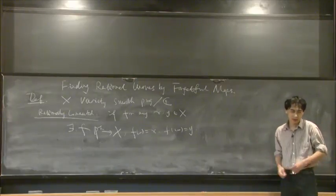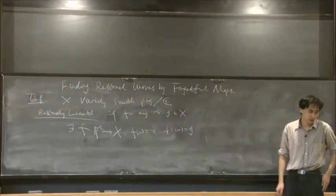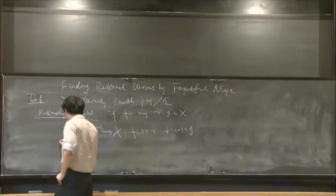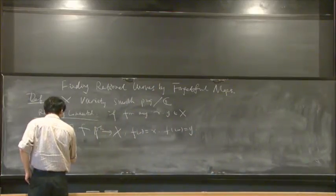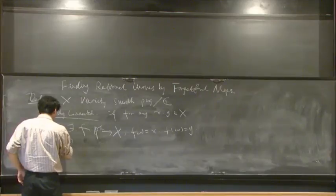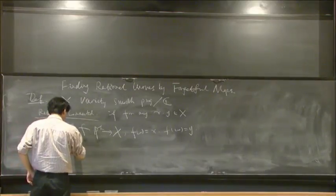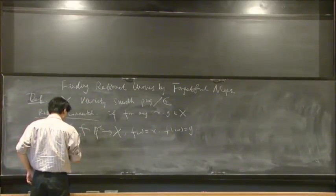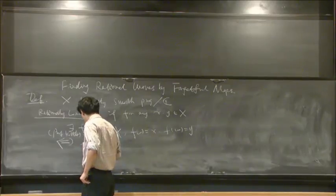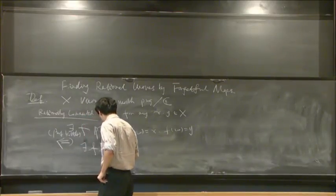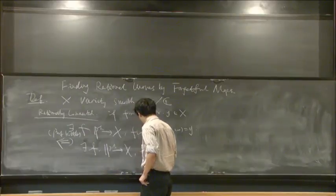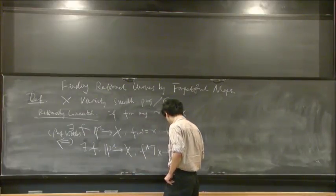So that's the definition: any two points can be connected by a rational curve. This definition is equivalent — by a theorem of Professor Kollár — to the existence of a map from P¹ to X with the pullback of the tangent sheaf being ample.